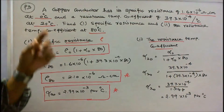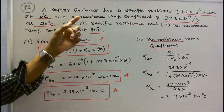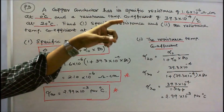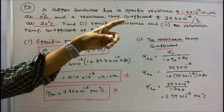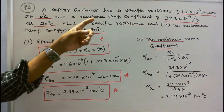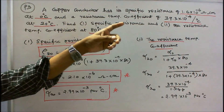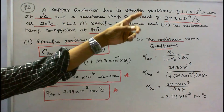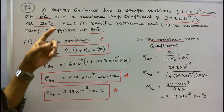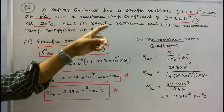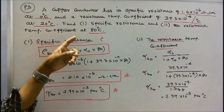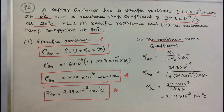Problem number 3. A copper conductor has its specific resistance of 1.6 into 10 to the power minus 6 ohm centimeter at 0 degree centigrade and the resistance temperature coefficient of 39.3 into 10 to the power minus 4 per degree centigrade at 0 degree centigrade. Find: (1) the specific resistance and the resistance temperature coefficient at 80 degree centigrade.